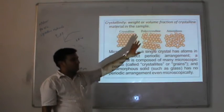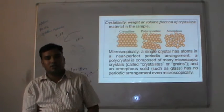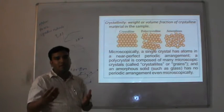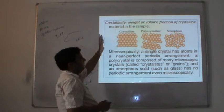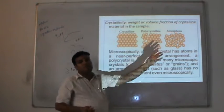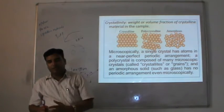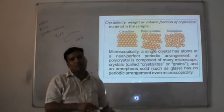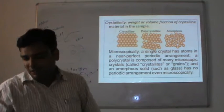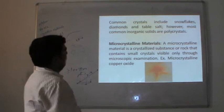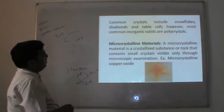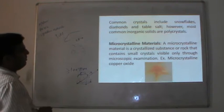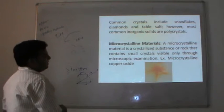From these three types we can understand that crystalline structures have a systematic array of atoms anywhere in the region. In polycrystalline they have the crystalline structure but with irregularity. The last one is amorphous, which are non-crystalline materials. Common crystals include snowflakes, diamond, and table salt. However, most commonly known solids are polycrystalline.